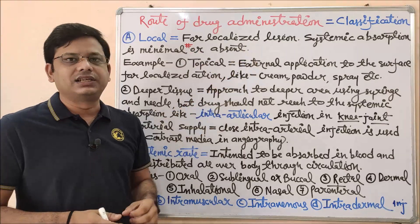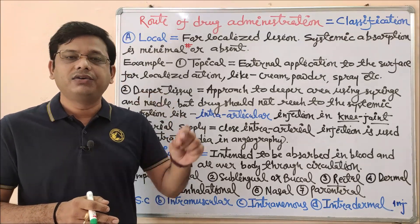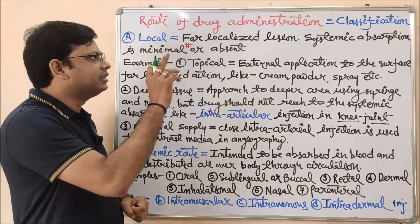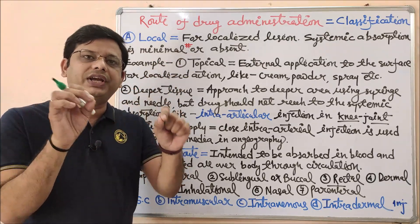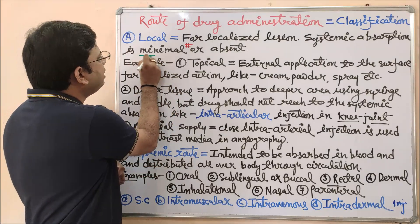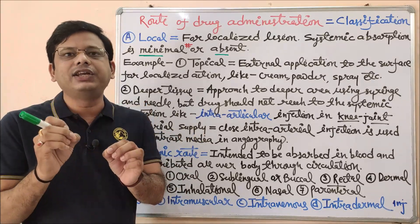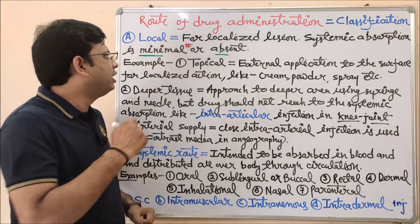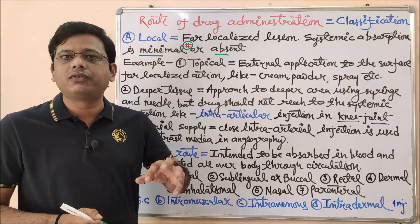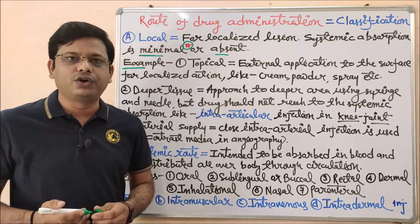This is considered a local route. To explain in detail: it is for localized lesion — a lesion or erosion which takes place in a particular part of your body, and you apply the drug on that particular part only. Next, systemic absorption is minimal or absent. Systemic absorption means whether the drug you have applied goes through the blood or not. In this case the drug goes minimally or is absent — meaning either very slightly or not at all. In a few cases, drugs applied over the skin may enter systemic circulation, but that chance is very rare; most cases it is absent.